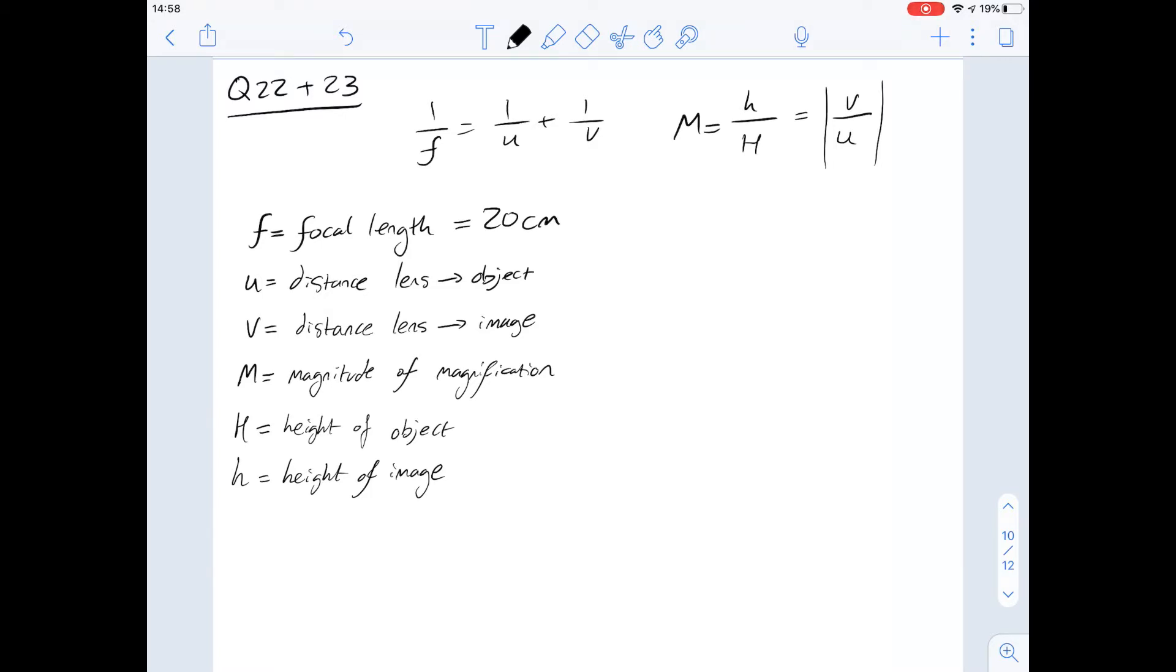Question 22 says if the plate is positioned 30 centimeters from the lens, the distance of its real image from the lens will be what? We can use this first equation to work this out.